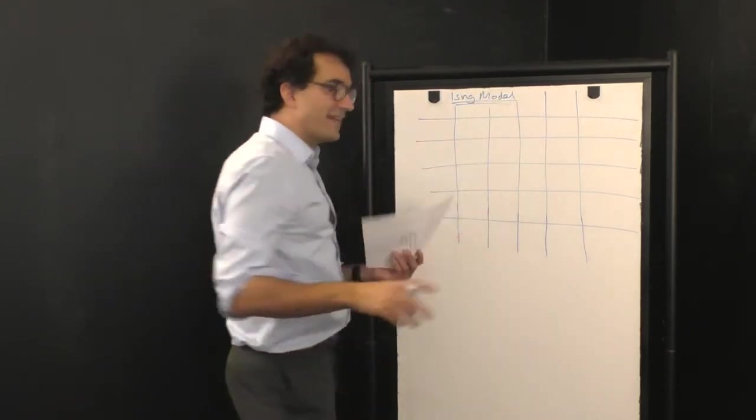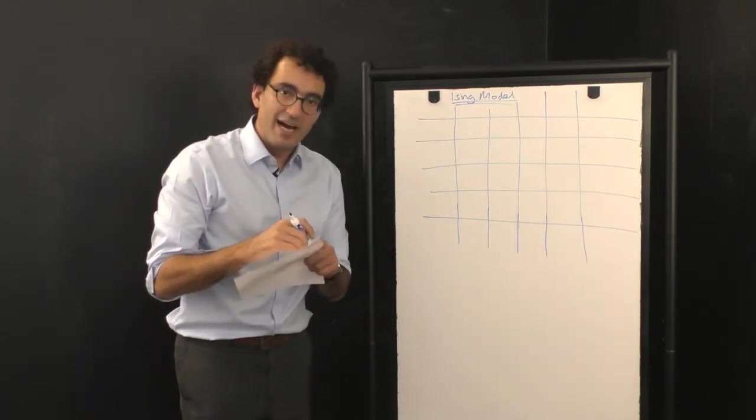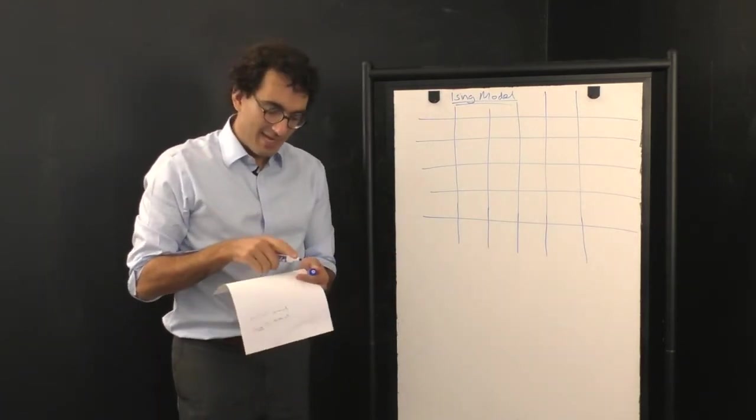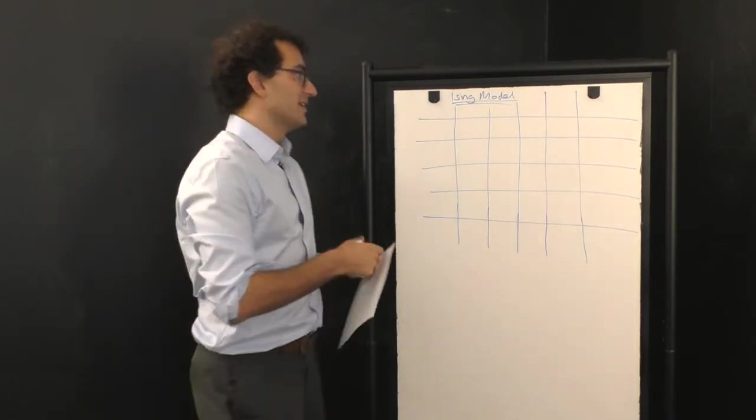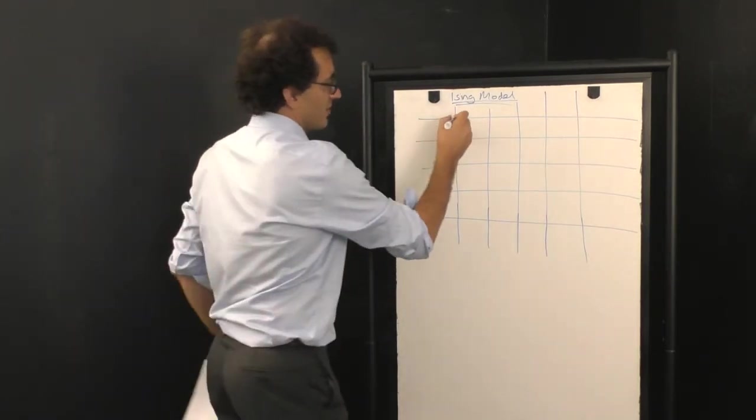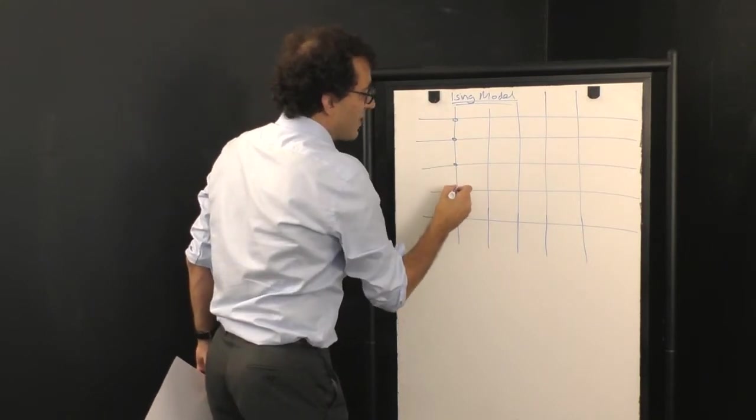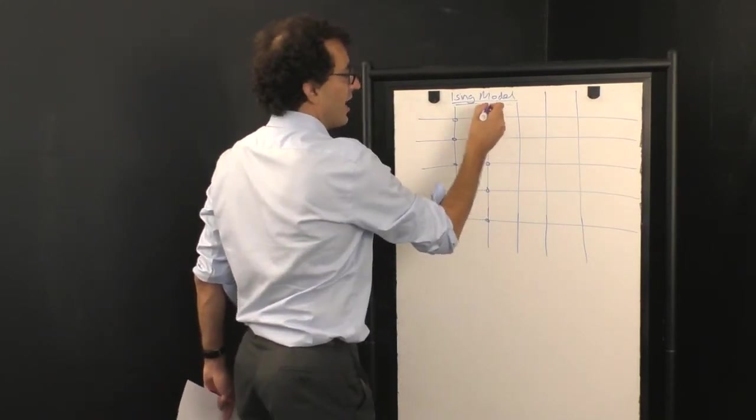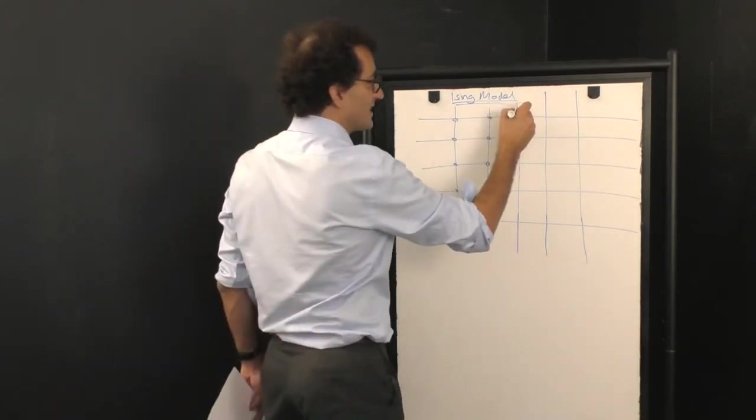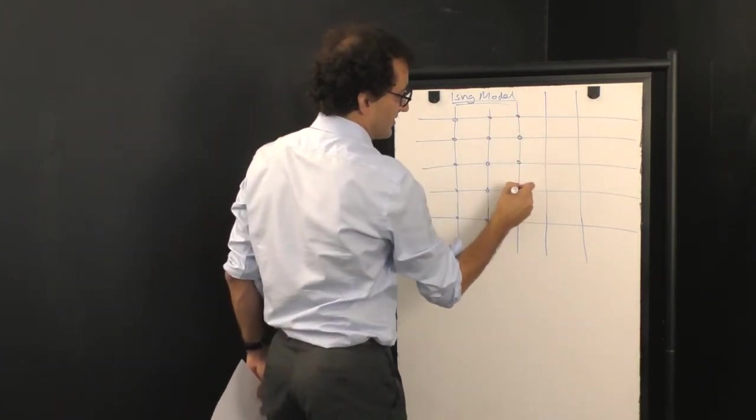The Ising model was invented to describe the behavior of atoms on a lattice, and in particular in this case we're going to do a two-dimensional lattice. So here's our lattice at every point here. Imagine that there's an atom, some sort of object, and what we're going to do is we're going to simplify for the purposes of this toy example.